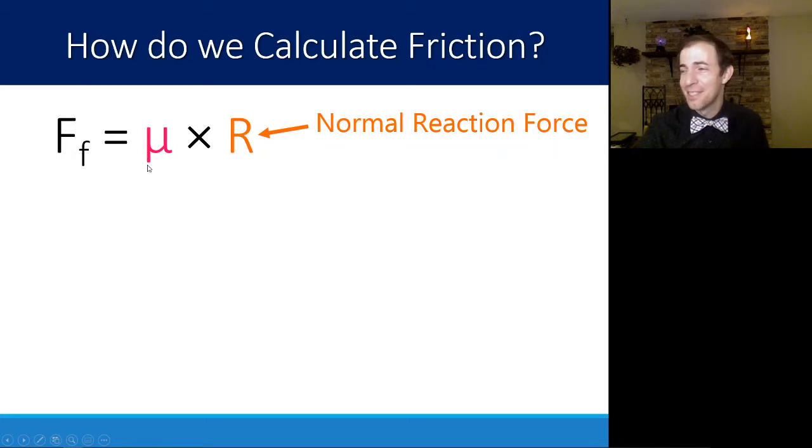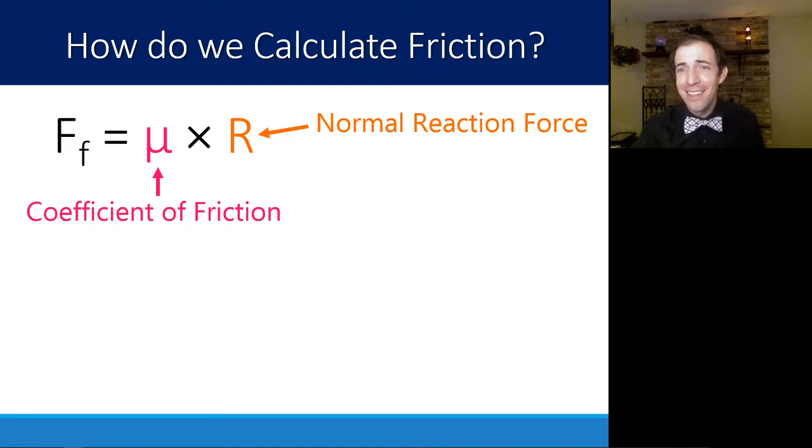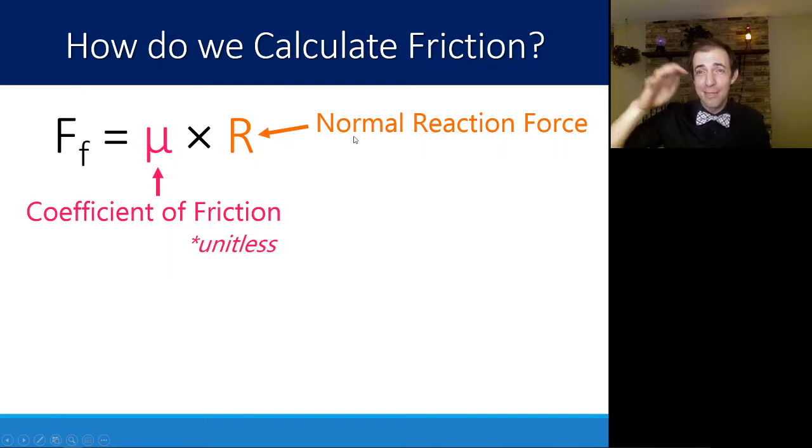μ here, this Greek symbol, is representing the coefficient of friction. In math, coefficients are just numbers, just multipliers out in front of some other variable. This coefficient of friction is actually unitless, there is no special unit to it. The two features that control how much friction is acting on the object are how much the surface is pushing and this coefficient of friction.